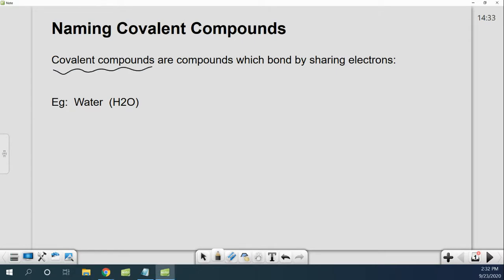A covalent compound are any compounds which bond by sharing electrons. Remember ionic steals or swaps electrons, one takes from the other. Covalent shares electrons. So let's look at for example water, H2O.